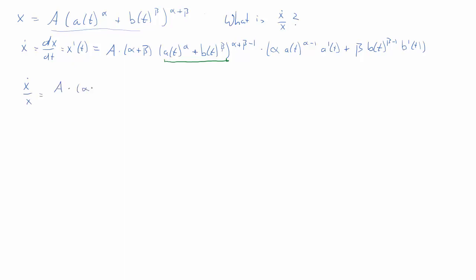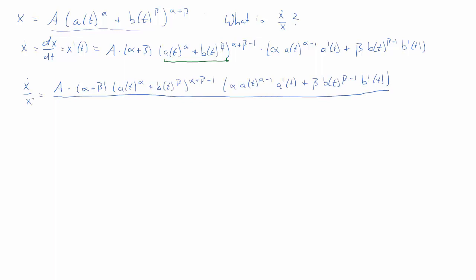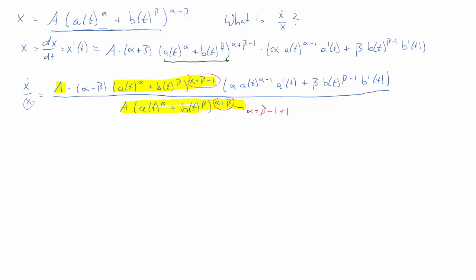Now let's get the growth rate by dividing that derivative by x. x is A times [a(t)^α + b(t)^β] to the exponent (α+β). Looking at the denominator, we notice that (α+β) equals (α+β−1) + 1, so the denominator has a factor matching the numerator which can be cancelled, leaving just one power of [a(t)^α + b(t)^β] in the denominator.